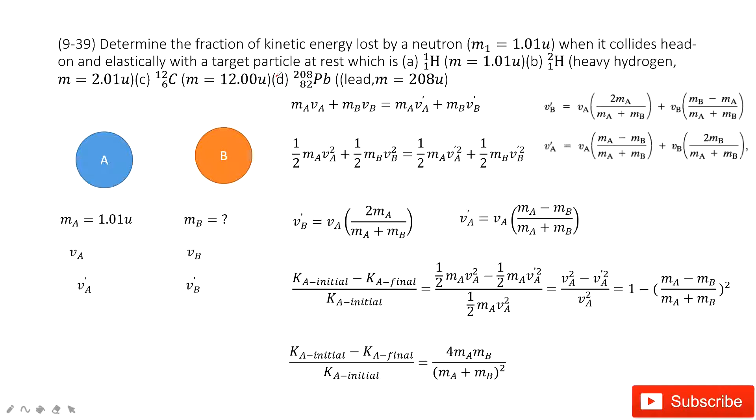In this one, we need to determine the fraction of kinetic energy lost by the neutron when it collides head-on and elastically with a target particle at rest. So first time, look at it. Wow, how can I understand it? It is so difficult. But wait, let's do it together. You will find it is super simple.